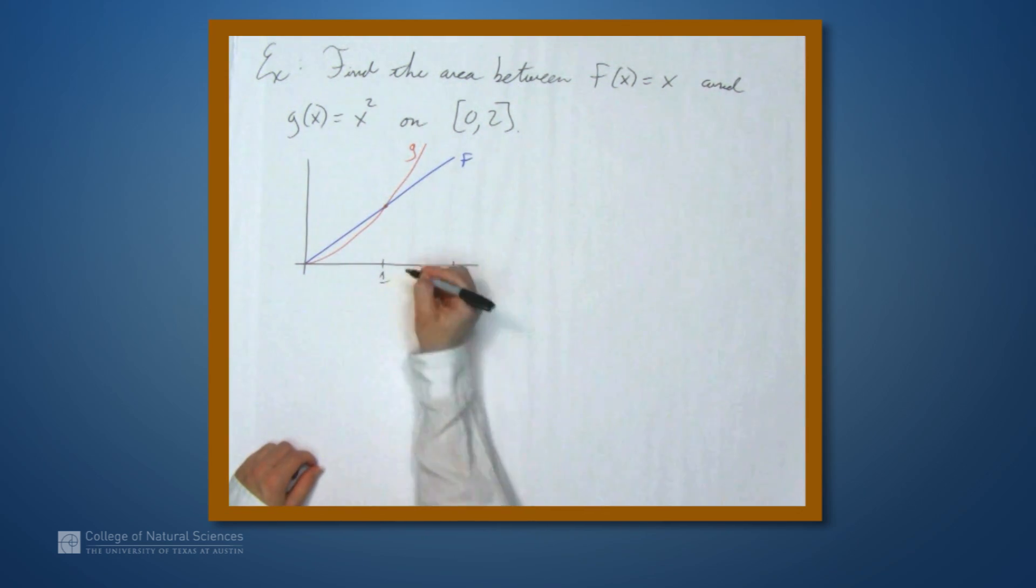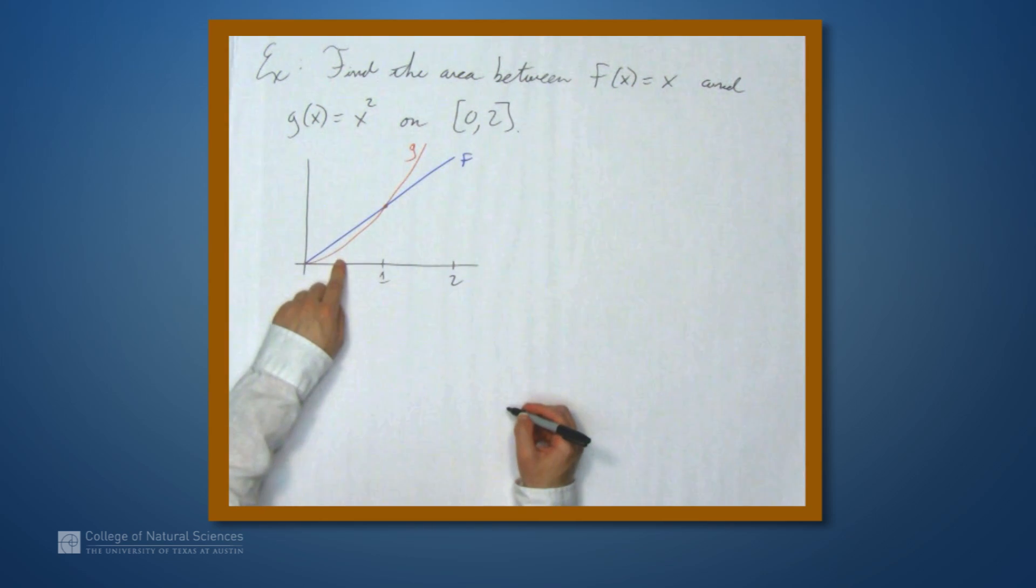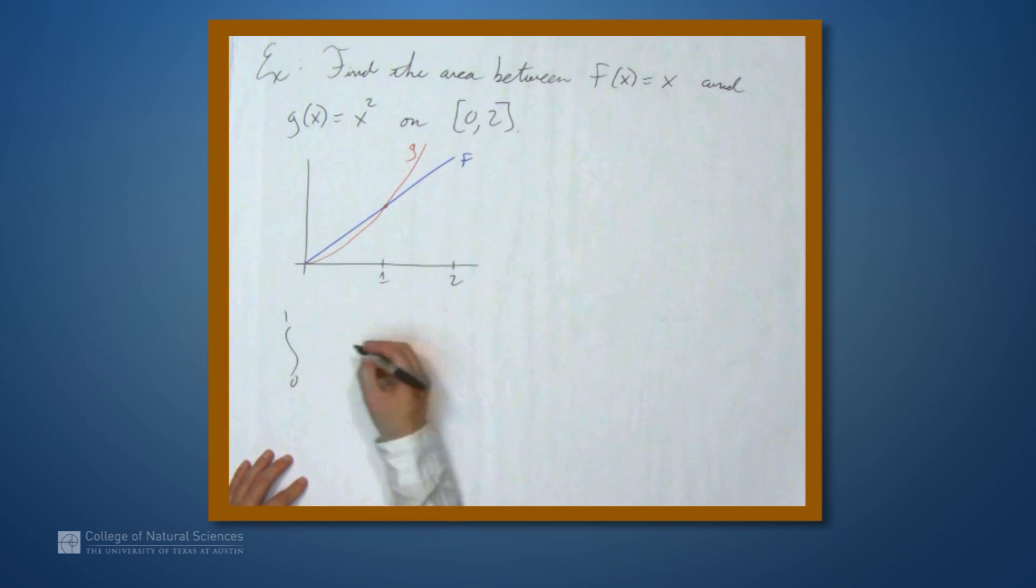So, more complicated example, because on part of this interval, f is above g. On the other part, g is above f. So we're going to have to write this area as a sum of two integrals. So we're going to get the integral from 0 to 1 of f minus g. So x minus x squared dx.